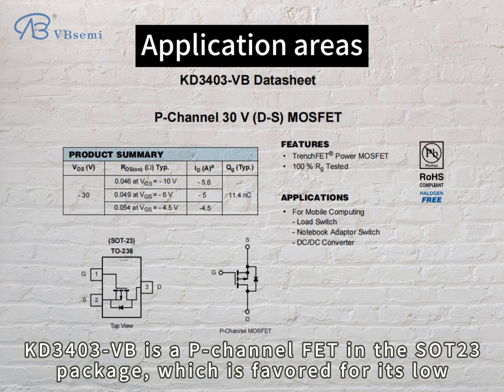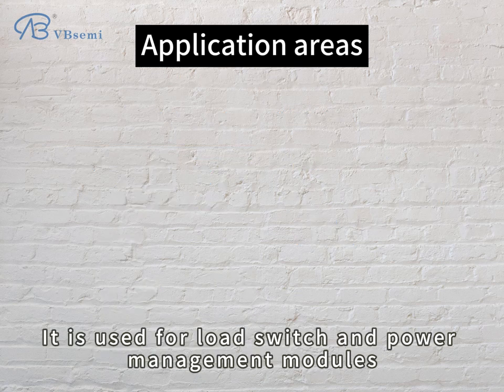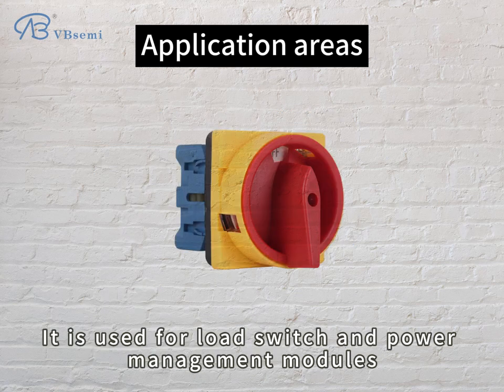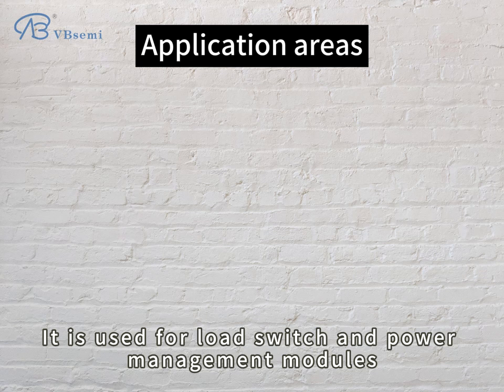KD-303VB is a P-channel FET in the SOT-23 package, which is favored for its low on-resistance and is suitable for load switching. It is used for load switch and power management modules.